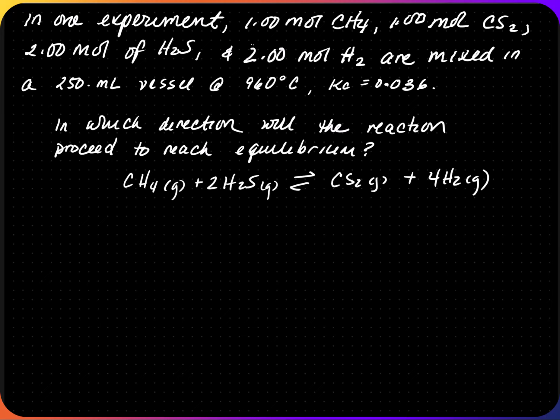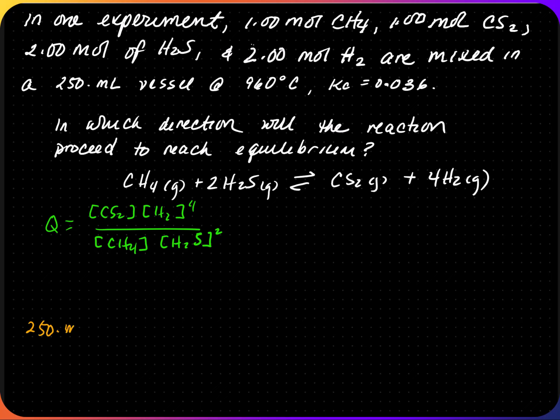In general, if all concentrations for both products and reactants are provided, it's usually a Q problem. We write the reaction quotient expression as products over reactants: CS2 to the first power times H2 to the fourth power, divided by CH4 to the first power times H2S to the second power. All states of matter are gases, but we use Qc because units are not given in pressure units. The volume of 250 mL must be converted to 0.250 liters.